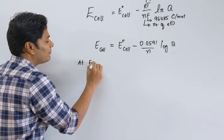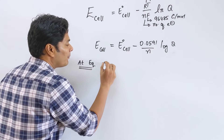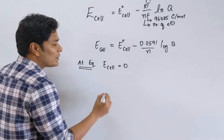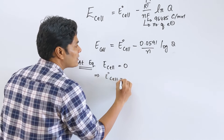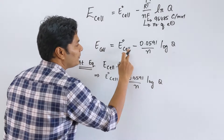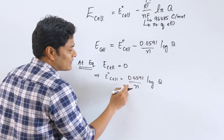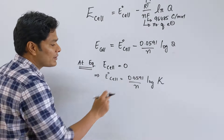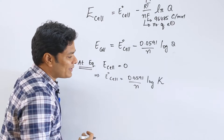At equilibrium, when the cell reaches equilibrium, your E_cell is 0. That tells you: at equilibrium, E° cell equals 0.0591/n × log Q. At equilibrium, I can replace Q with K. This is important because they can ask questions related to K_sp as well, and we will do a problem based on that.